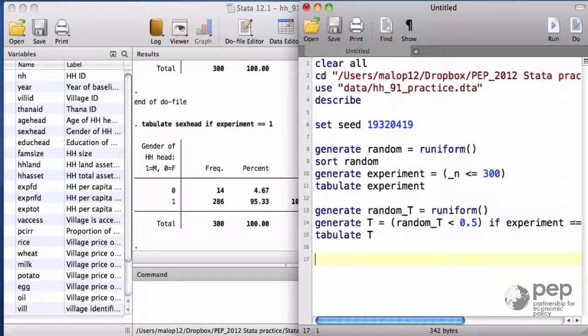To stratify in a binary variable, the concept is easy. We only need to randomize separately on each group created by the dummy. Take the women, randomize into treatment and control, and then do the same separately for the males.